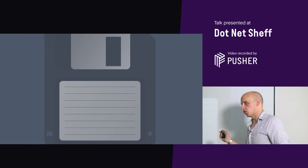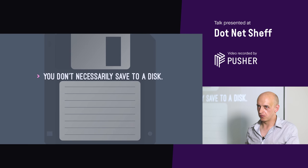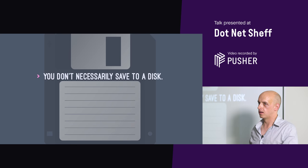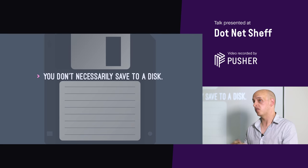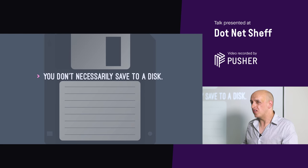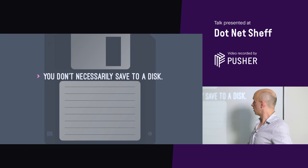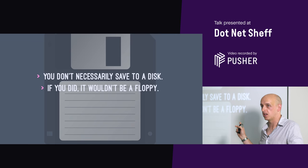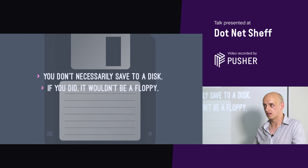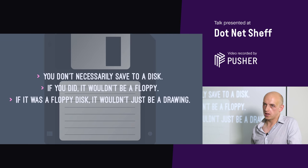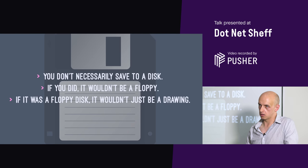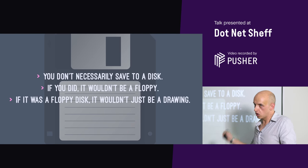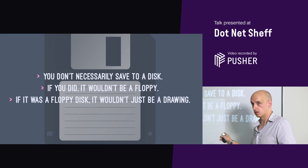That affordance is very artificial — we know you're not saving to a disk. In the modern world you're probably saving to some cloud server, maybe to memory. It's probably not saving to a floppy disk, and it's definitely not saving to a picture of a floppy disk. That's not a floppy disk — that's a drawing, an SVG picture. It was never a floppy disk.